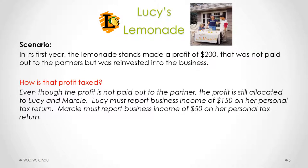Even though the profit is not paid out, it is still allocated to Lucy and Marcy. Lucy must report business income of $150 on her personal income tax return, and Marcy must report $50 of business income on her personal tax return. Even though the $200 profit was kept within the business, it still has to be reported by each individual partner.